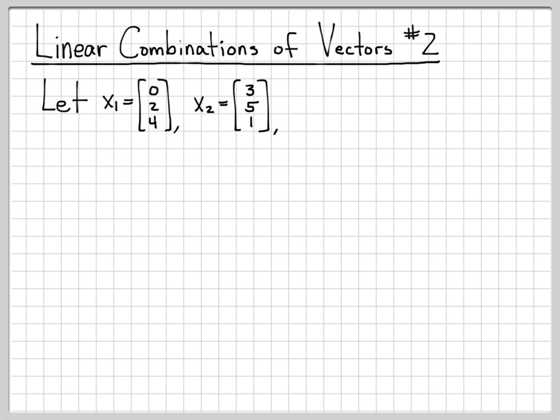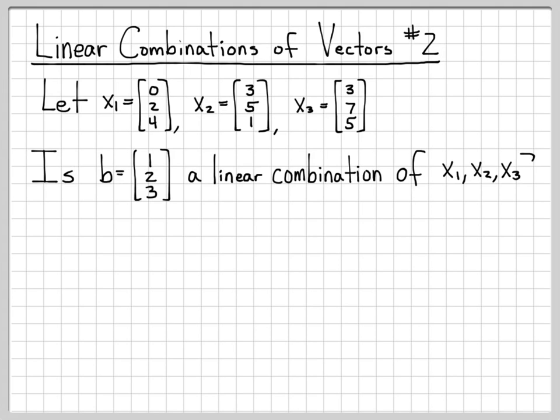The vectors we'll work with in this example are x1, x2, and x3. Here are the three vectors. And our question again is, given this vector b, which is 1, 2, 3, is b a linear combination of x1, x2, and x3? That's the question we're trying to ask.